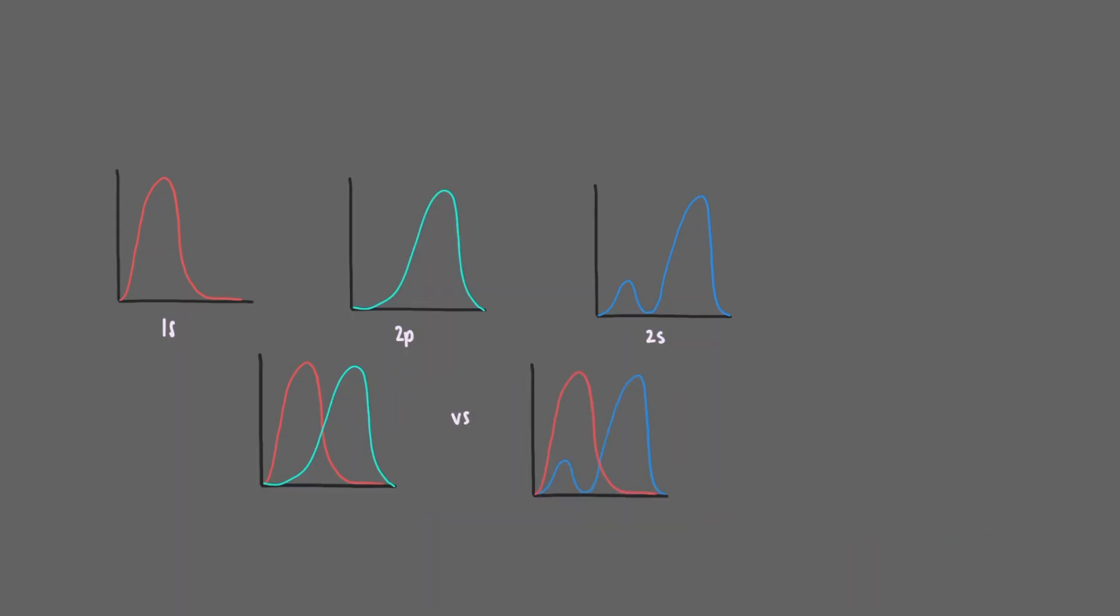The 2s wave is only partially shielded by the 1s electron wave, but the 2p wave is fully shielded by the 1s electron wave. This means that the 2s wave feels more of the attractive force of the nucleus than the 2p wave does.